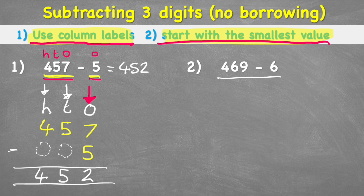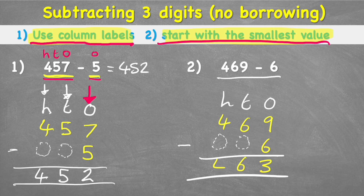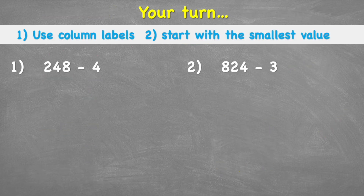Question two: 469 subtract 6. I'll do this a little quicker. I put ones, tens, and hundreds labels, then place the numbers: nine ones, six tens, and four hundreds in the first number, and six ones in the second number. Equals line, subtraction sign — ready to begin. In the ones column: 9 subtract 6. I put up nine fingers and take six down — three fingers left, so the answer is 3. Let me add placeholder zeros: 6 subtract 0 is 6, and 4 subtract 0 is 4.